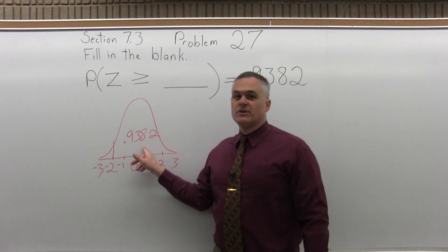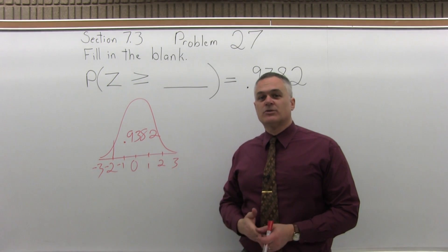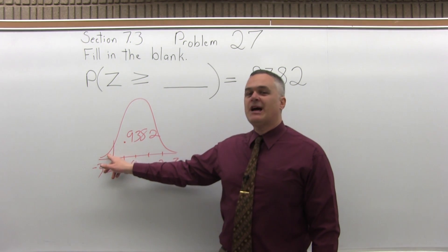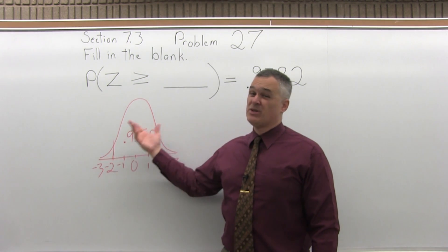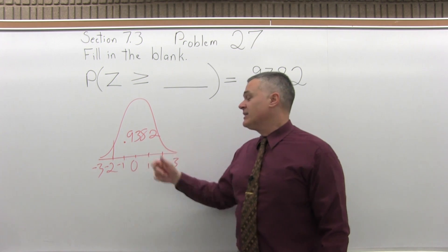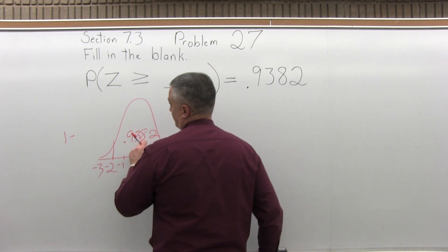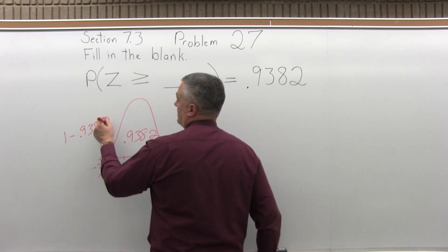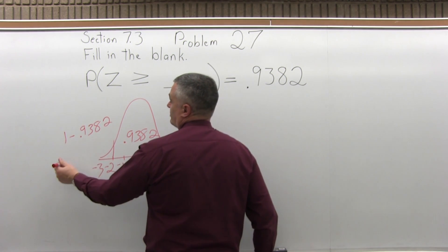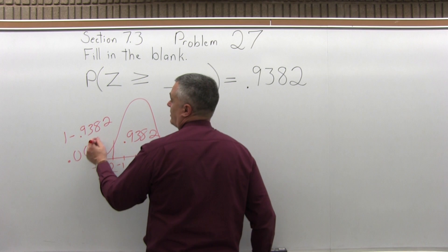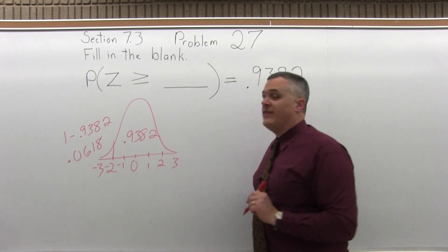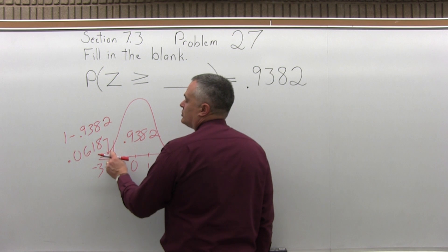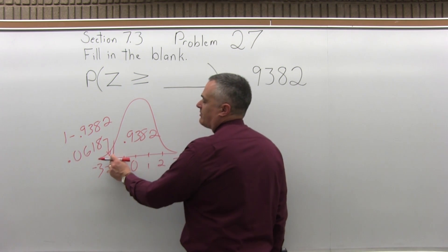Now the .9382 isn't really going to help me. The way that standard normal chart is set up, it will tell me the probability of being to the left of what I look up. I know the probability of being to the right. So to find the left, just simply do 1 minus the probability of the right to the other side. So 1 minus .9382 is .0618. That is the area that's to the left of the number we want to find.